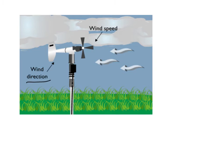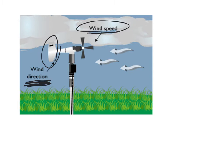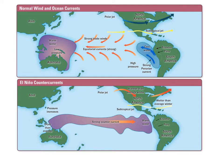Winds have two properties we worry about: direction and speed. We measure direction using a wind vane system, and remember we name a wind by where it comes from — a westerly wind means it's blowing from the west to the east. Wind speed tells us how fast the wind is moving. When we report winds we give both direction and speed, which gives us a clear picture of the winds.